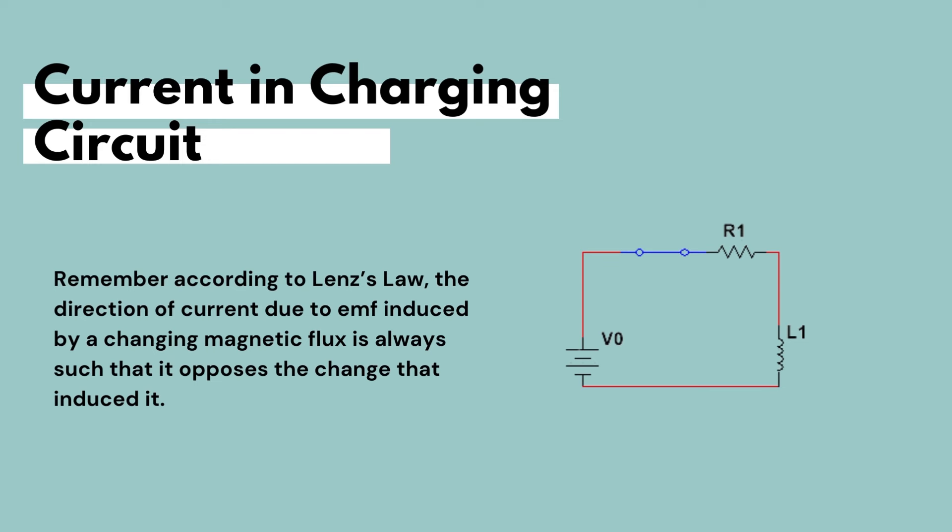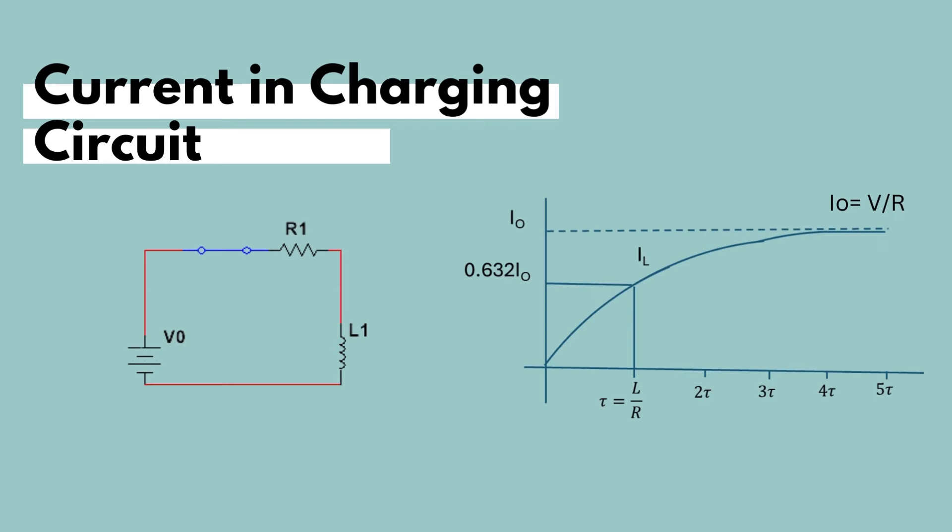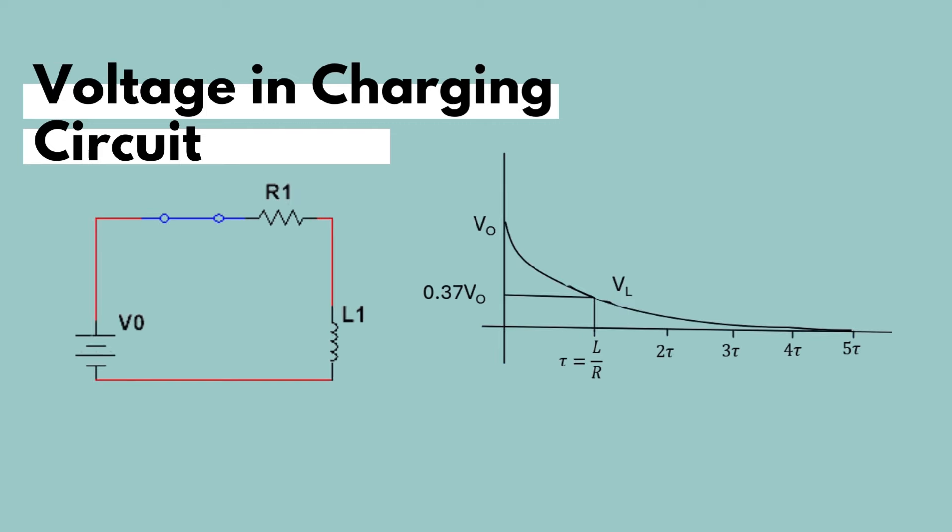But remember, according to Lenz's law, an induced current always flows in a direction that opposes the change that produced it. So at the beginning, there will be an opposition to this current that's trying to flow in the inductor. But gradually, current will increase until it reaches the final value of I equals V over R. And at the same time, the voltage across the inductor will decrease until it reaches zero.